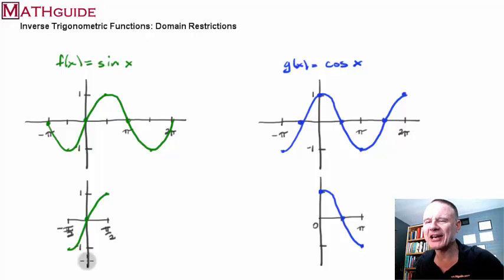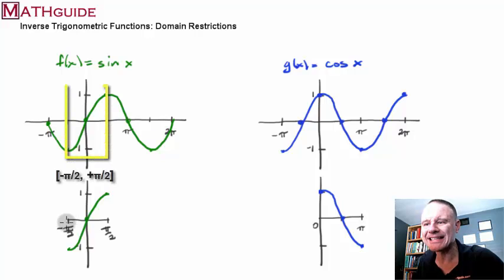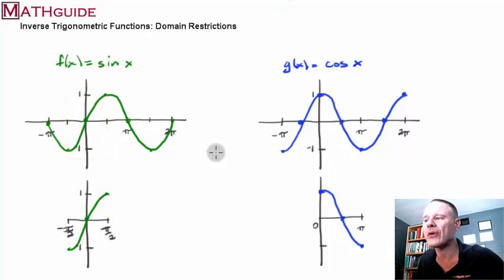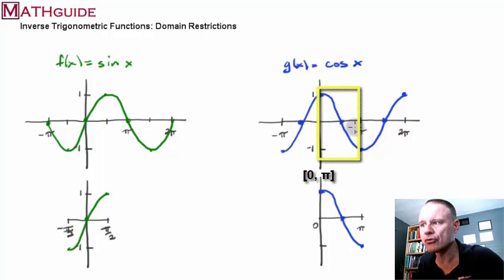Alright, so, what I've done is I've taken a portion of the curve, just like this, right? So, if you look at the sine curve, I just took the section of the curve that goes from negative 90 to positive 90. And I have that section of the curve, the original sine curve. Now, if you look at the right side, the cosine curve. The cosine curve, I've taken the portion that goes from zero to pi. I've got that section.